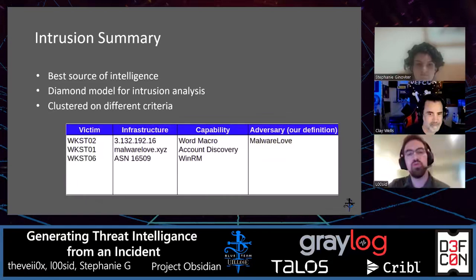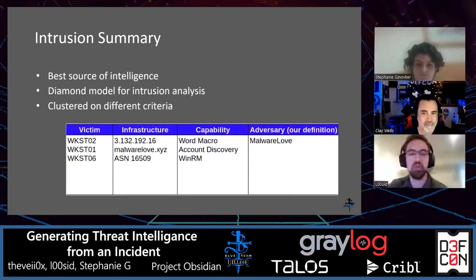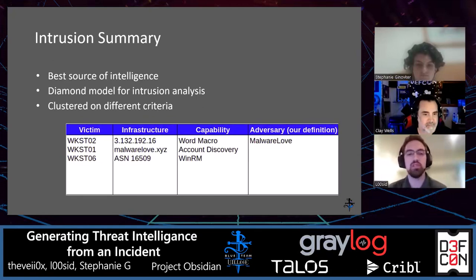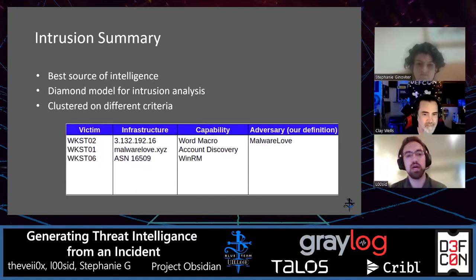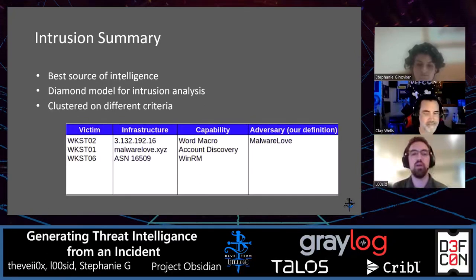Another way to show the data from an intrusion is an intrusion summary — a listing of all the different data points from the previous graph and the same information. Intrusion summaries from inside an organization are really the best source of intelligence to show what's actually going on with that company. With thousands of attacks going on outside the organization even in a single day, the diamond model can help visualize the data points from these summaries, and you can start to see clusters of activity emerge — going from a summary to a way of modeling or visualizing the data to starting to see patterns.